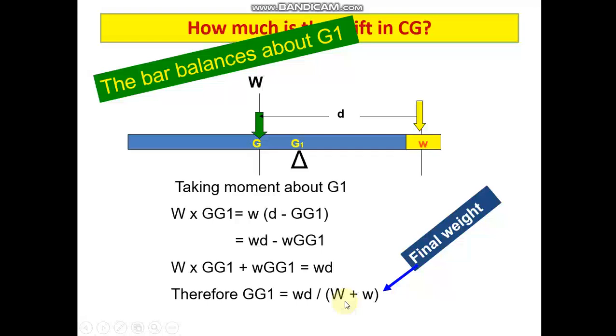When you are adding mass, the formula will have a positive sign in the denominator, and when you are removing mass, it will have a negative sign in the denominator. Otherwise, the formula is the same. You also have to understand the direction in which G1 will shift: away from the position where mass is removed and towards the position where mass is added. This is the fundamental thing which we need to keep in mind when calculating shifting, addition, or removal of masses on board ships.